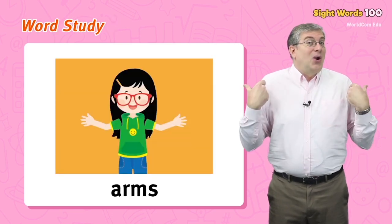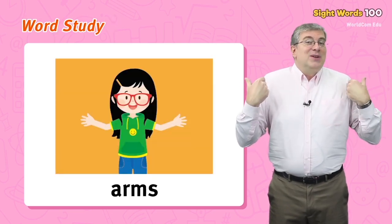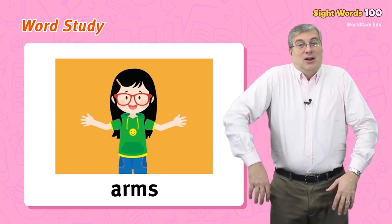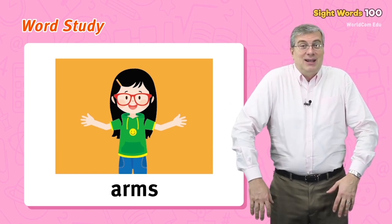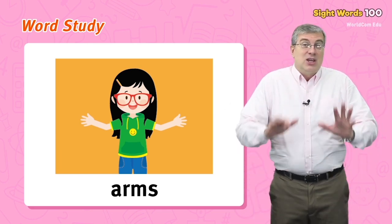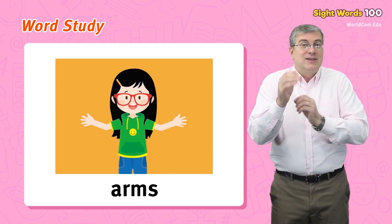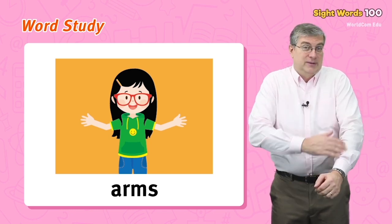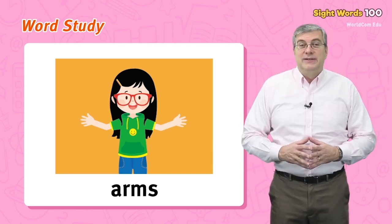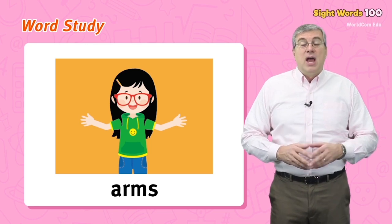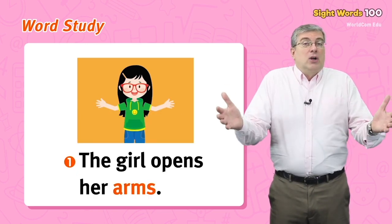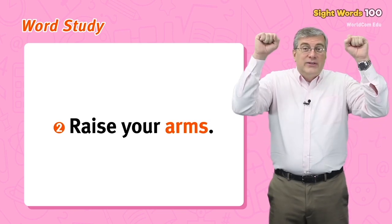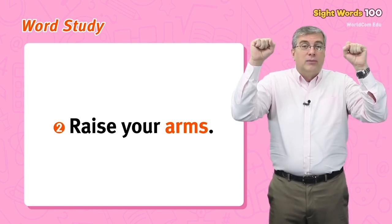What are arms? These are the things that hang on both sides of your body — on your right side and on your left side. You have hands at the end of your arms. For example, the girl opens her arms, or raise your arms.